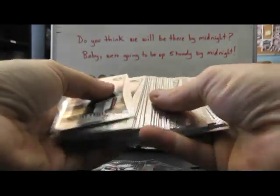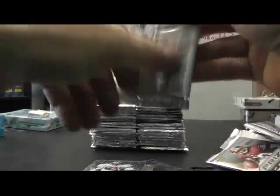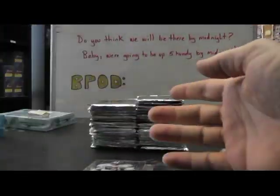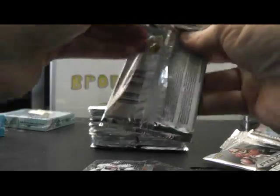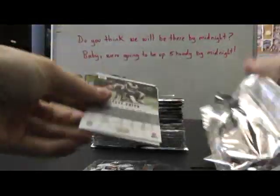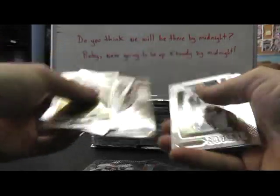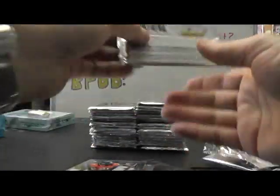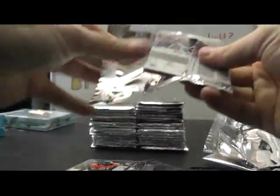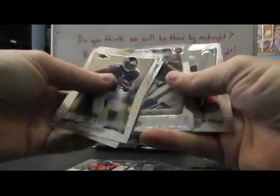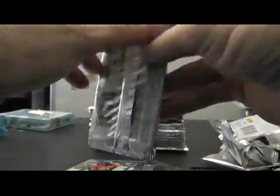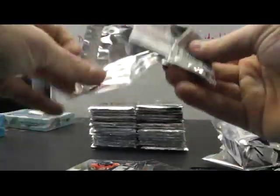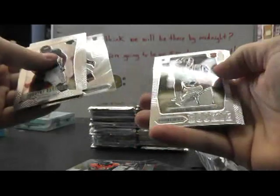Emmitt, nope, Deion Sanders, DeVier Posey. Oh wait, is that a prism? Nope. Courtney Upshaw, that's just a rookie. Ronnie Hillman, Trumaine Johnson is the rookie. T.J. Graham rookie. T.J. Graham rookie. Shea McClellin and Trumaine Johnson rookie.